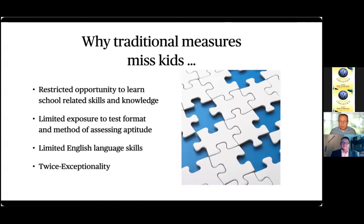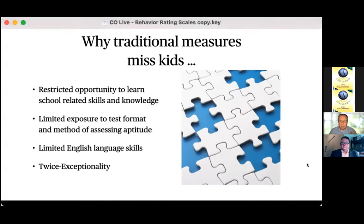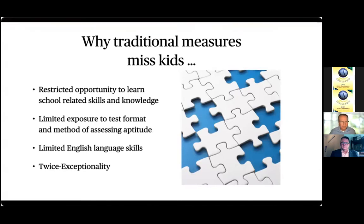Kids with limited English language skills — certainly here in Texas and the Southwest — don't perform as well on verbal tests; they're coming in at a deficit by their very nature. Also, a child who's incredibly intelligent but has a learning disability or some other twice-exceptionality that prevents classroom performance will be poorly identified by traditional measures. But teachers are very good at picking those kids up because they can see the progress being made in the classroom and compare it to others.